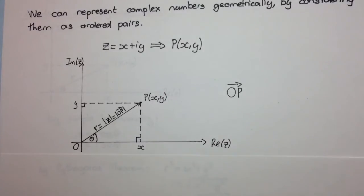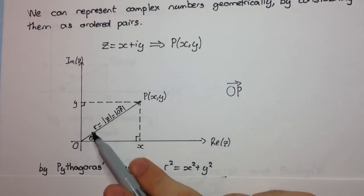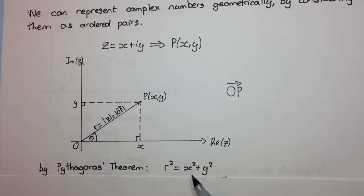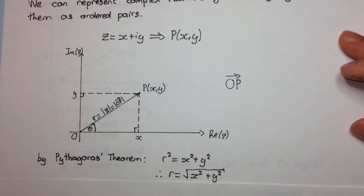And we can use our Pythagoras Theorem, and see that if we call the length r, so therefore r squared is equal to x squared plus y squared, all right? That's simple trig, and therefore r is the square root of x squared plus y squared.